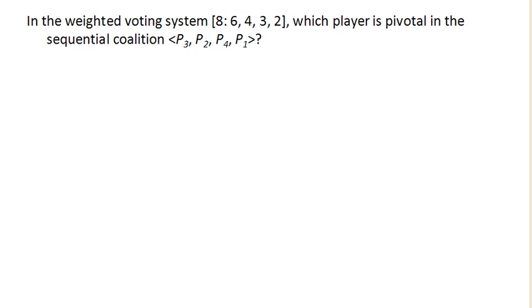So if we just had P3 all by themselves, P3 would have a weight of 3. When player 2 joins the coalition, because now we're imagining sequentially joining, then the new weight is 4 plus 3 is 7.